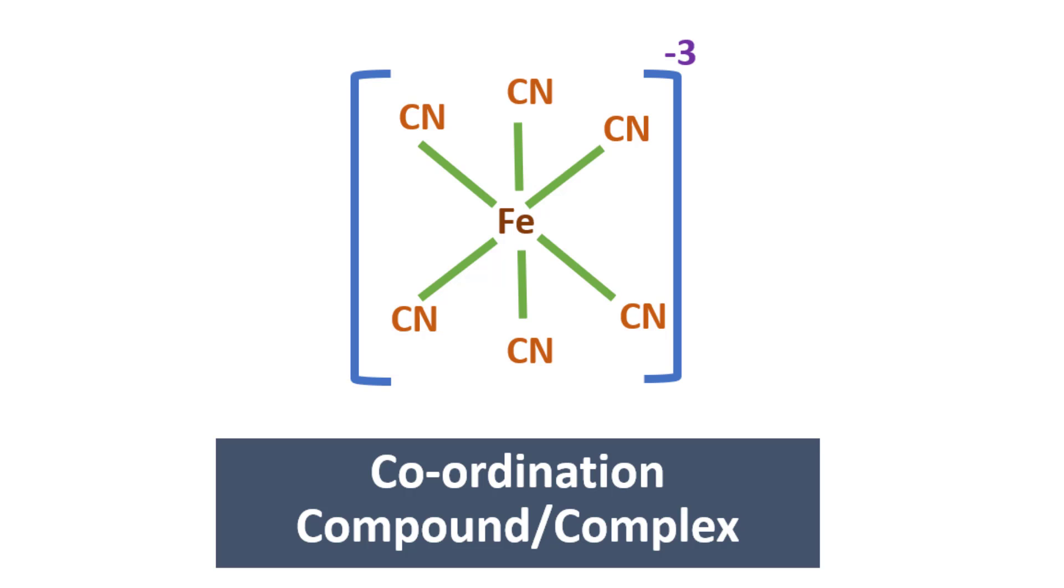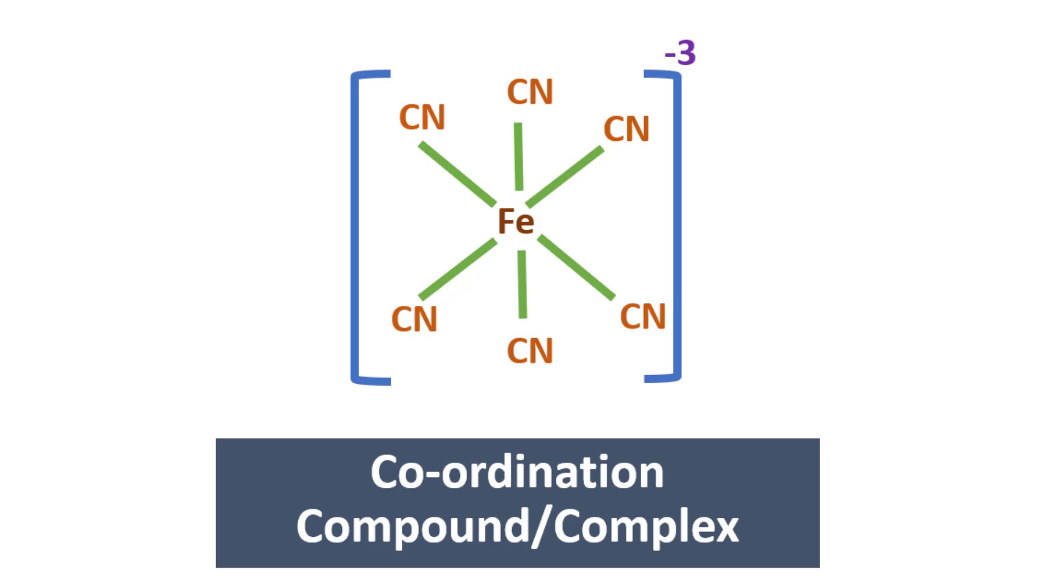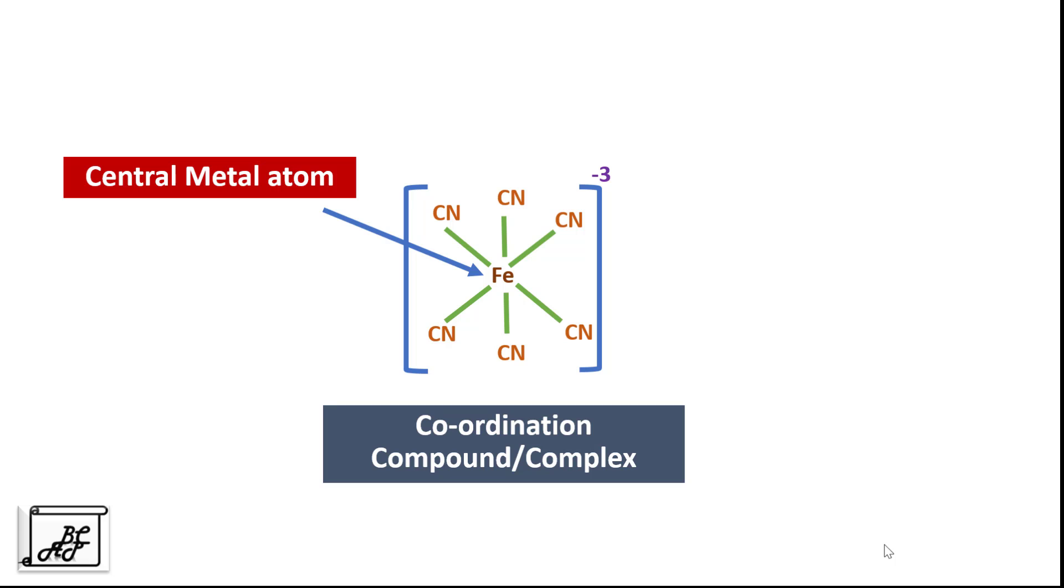So if it would have been K3FeCN6, it would have been called as coordination compound. But now as we can see there is a minus 3 charge on it, it is called as complex ion, found when an ion mostly of a metal is directly linked to a group of neutral molecules or ions. The most common complex ions are the metal centered complex. Now in this case, the metal is at the center. This is called the central metal atom Fe.